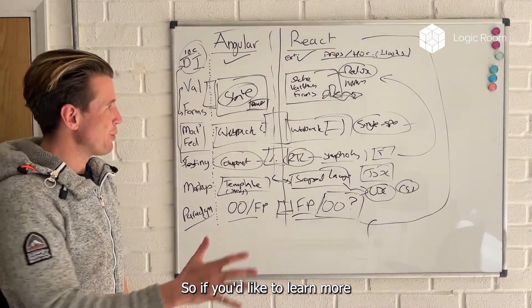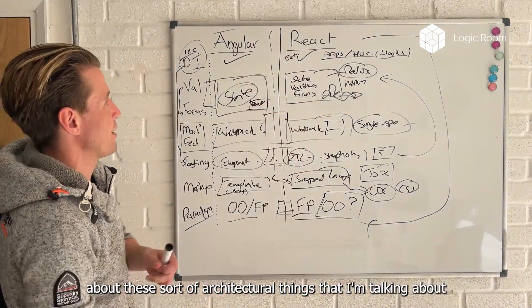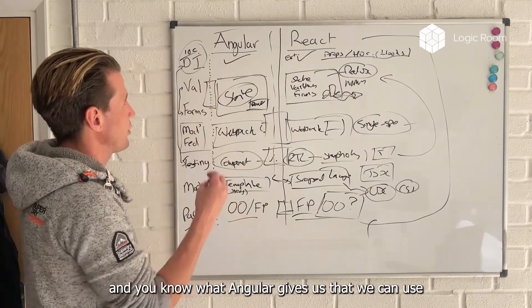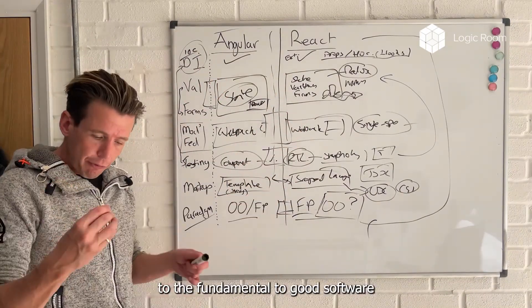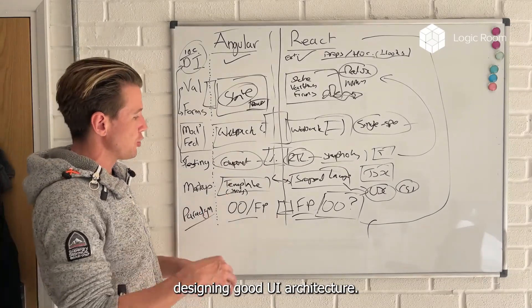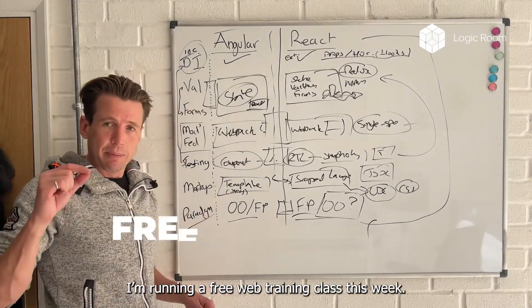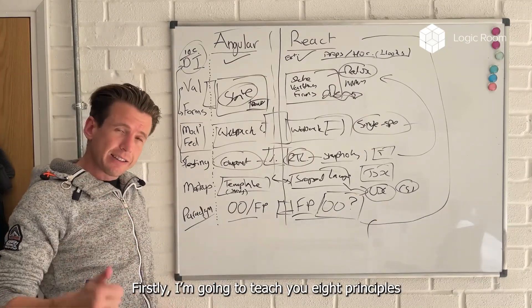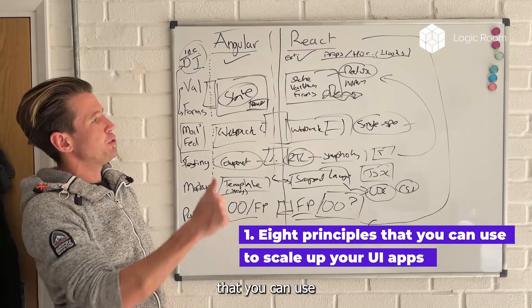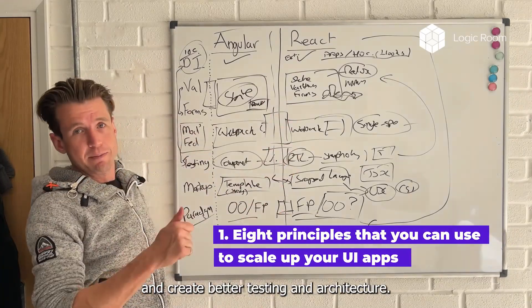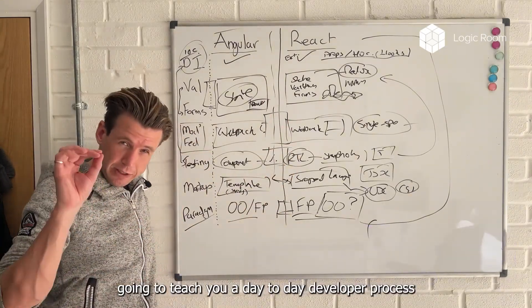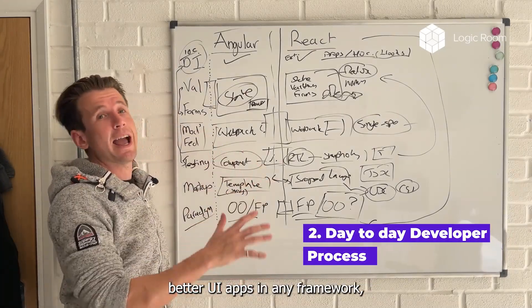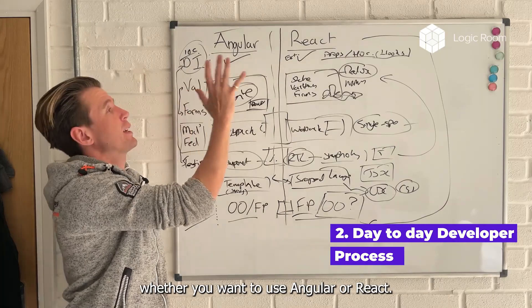So if you'd like to learn more about these architectural things that I'm talking about, and how to do them in React apps, and really what they're all about, and what Angular gives us that we can use in React that are fundamental to good software design, good UI architecture, I'm running a free web training class this week. In the web training class, we're going to be going over three things. Firstly, I'm going to teach you eight principles that you can use to scale up your UI apps and create better testing and architecture. Secondly, I'm going to teach you a day-to-day developer process that you can use to write better UI apps in any framework, whether you want to use Angular or React.